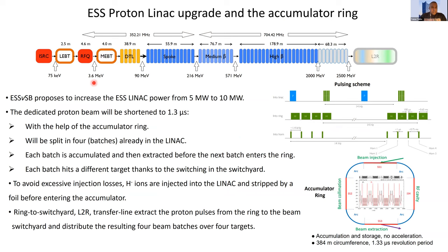What you see here is a schematic diagram of the ESS linac with the proposed upgrade for the ESS neutrino SB program. The ESS neutrino SB proposes to increase the ESS linac power from 5 megawatt to 10 megawatt, with dedicated proton pulses shortened to 1.3 microseconds. The blue pulses are for neutron generation in normal ESS operation, while the intermediate green ones are dedicated for the ESS neutrino SB program, accomplished with the help of an accumulator ring.